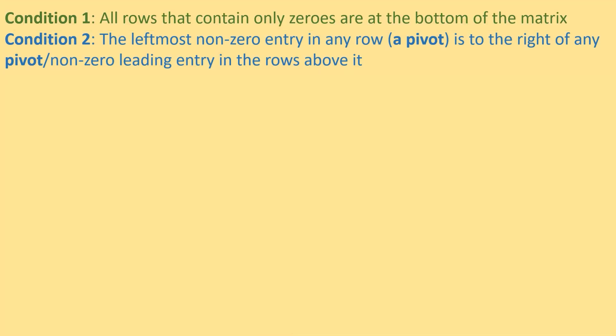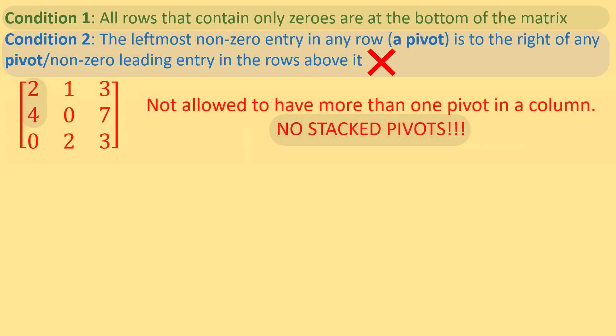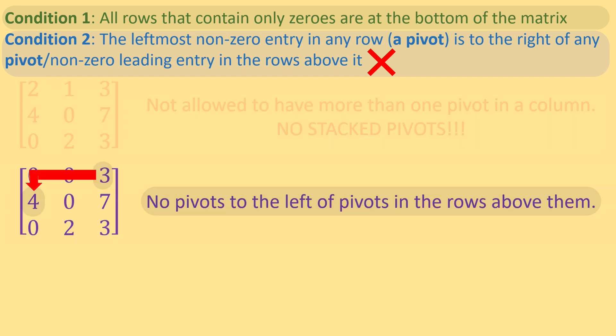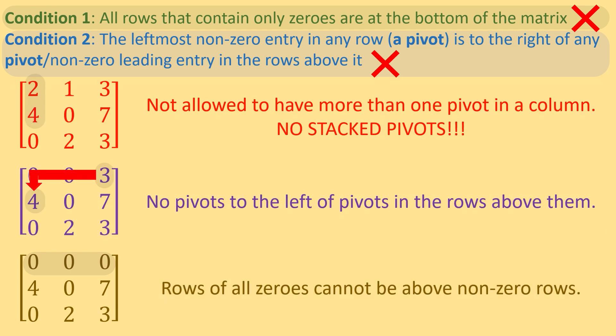To summarize: to satisfy both conditions, a matrix cannot have two pivots in any single column — no stacked pivots — pivots cannot be to the left of the pivots in the rows above them, and zero rows cannot appear above non-zero rows. If you see any of these within your matrix, you know it's not in row echelon form.